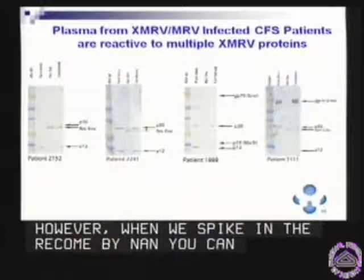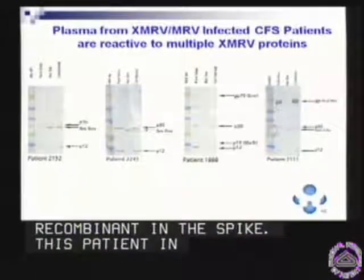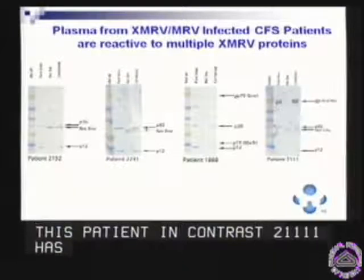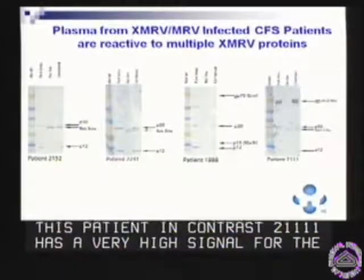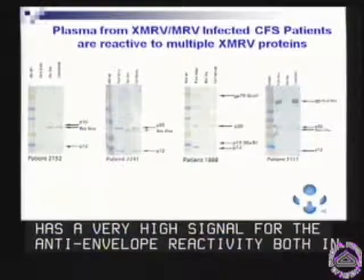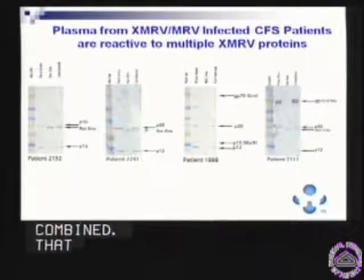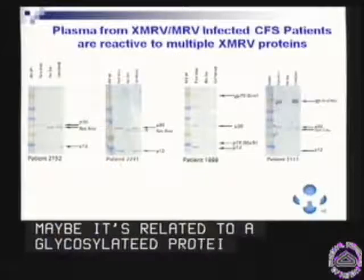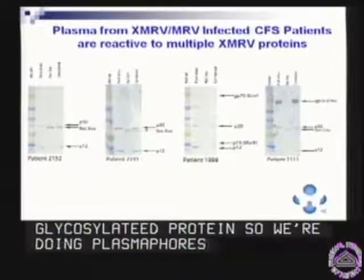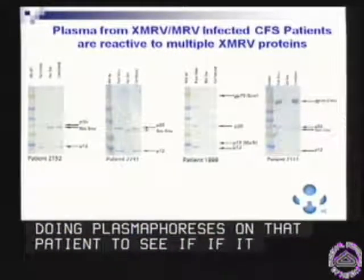This patient, in contrast, has a very high signal for the anti-envelope reactivity, both in just the purified virus and the combined. That broadband suggests it may be related to a glycosylated protein, so we're actually doing plasmapheresis on that patient — that might be a very good reagent to use in validating some of these tests.